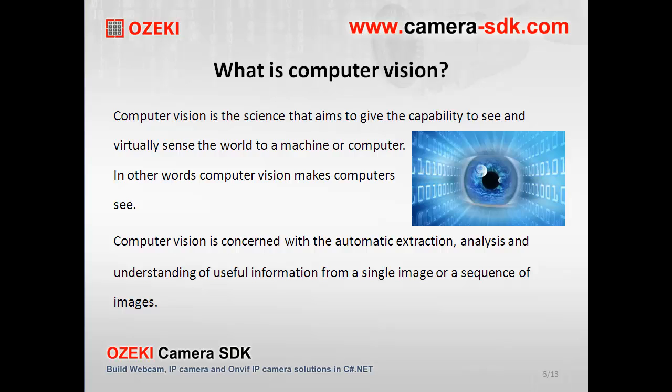Let's begin with the concept of computer vision. Computer vision is the science that aims to give computers the capability to see and virtually sense the world. Basically, computer vision makes computers see. It is concerned with the automatic extraction, analysis, and understanding of useful information from a single image or a sequence of images.